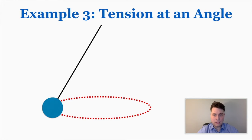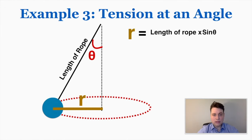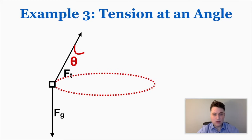Moving on to example three — the last example for horizontal circular motion — this is tension at an angle. We have a ball attached to the end of a wire, angled and spinning in a horizontal circle. The radius of the ball's path equals the length of the rope times the sine of the angle, because that's the opposite side of the right triangle formed when you draw the radius. The only forces present are the force of tension (pointing along the rope) and gravity pointing straight down.